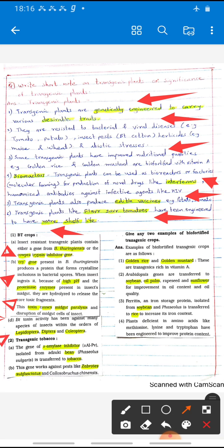Bt toxin activity has been shown against many species of insects, for example Lepidoptera, Diptera, and Coleoptera. In similar way, transgenic tobacco is also produced with the help of genetic engineering.